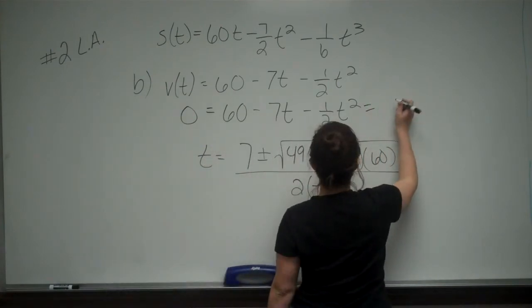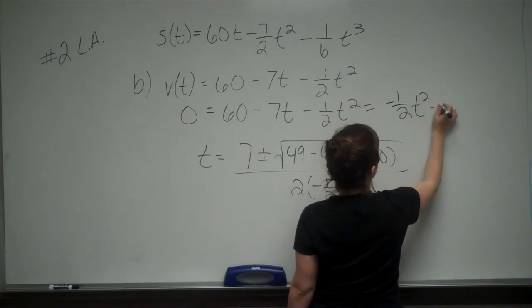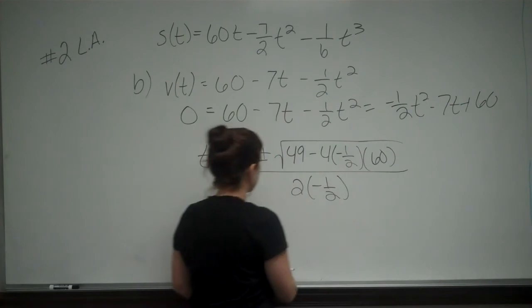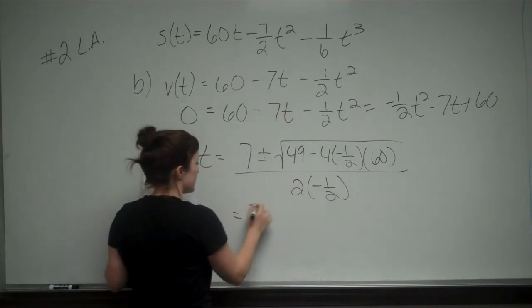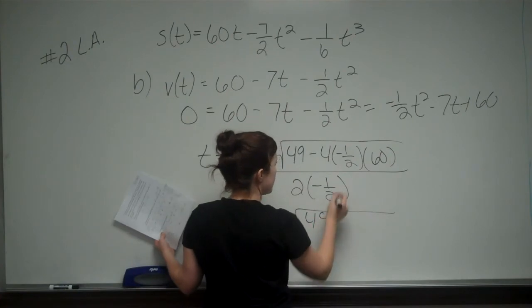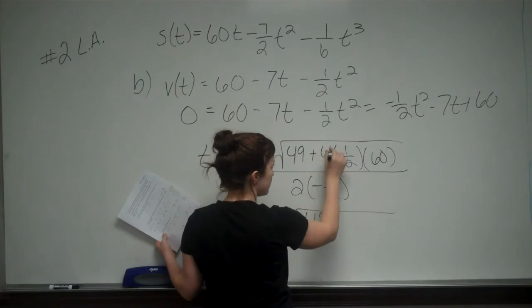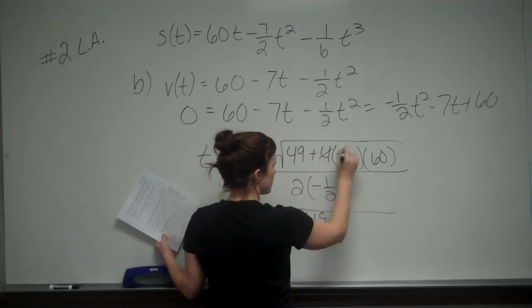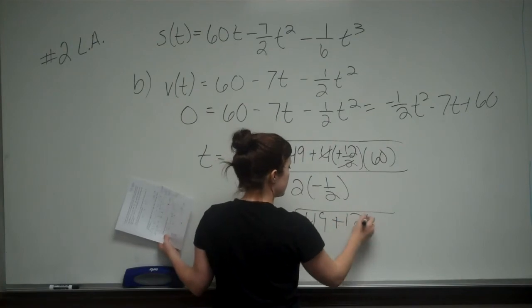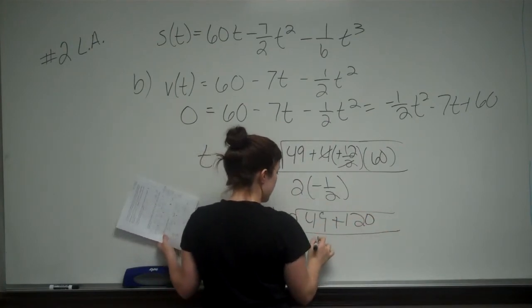So this formula would really be written as negative 1 half T squared minus 7T plus 60. I solved this, and I get 7 plus or minus the square root of 49. Negative 4 times A negative 1 half gives me positive 2. 2 times 60 is 120, all over 2 times negative 1 half, which is negative 1.